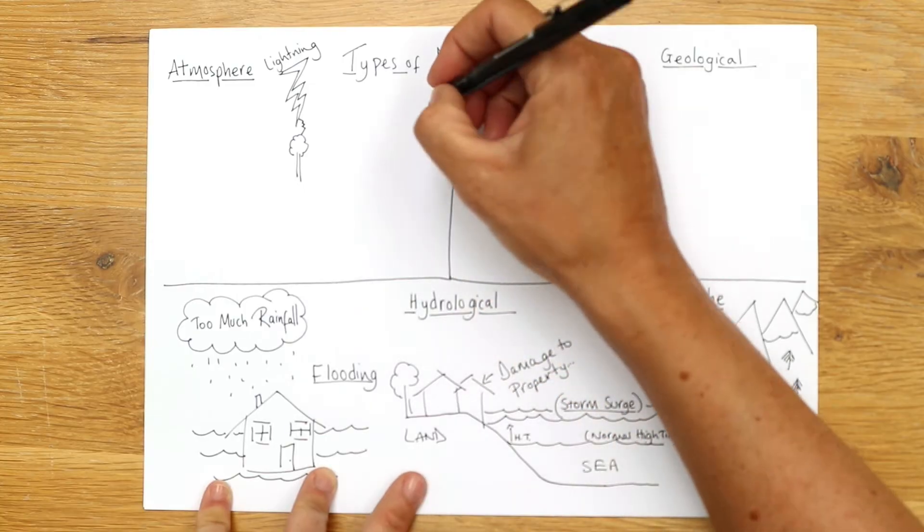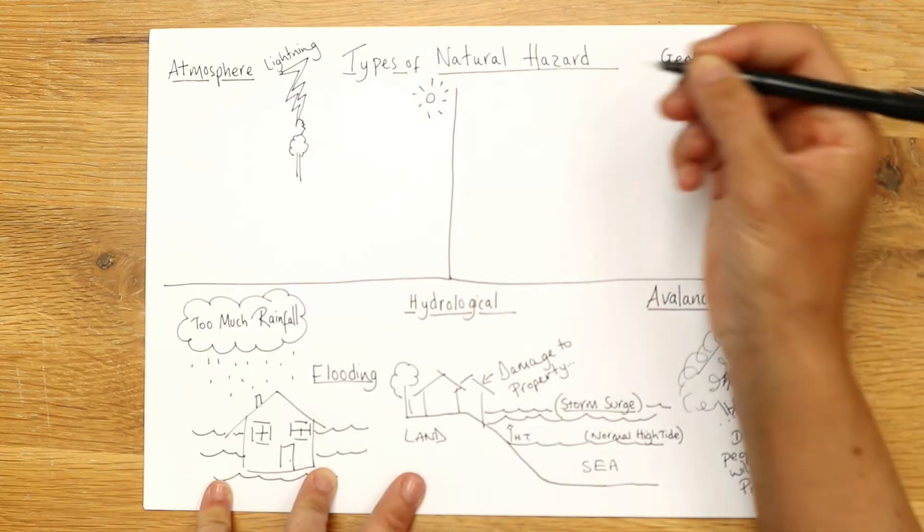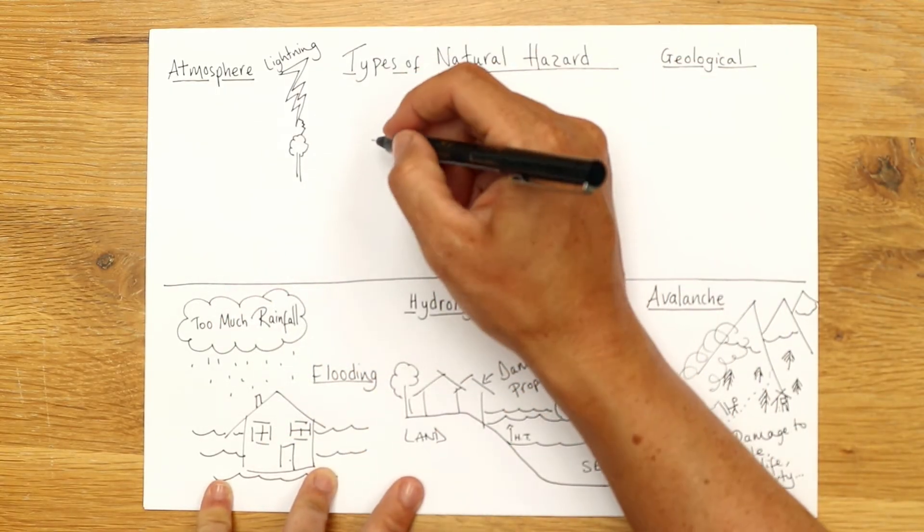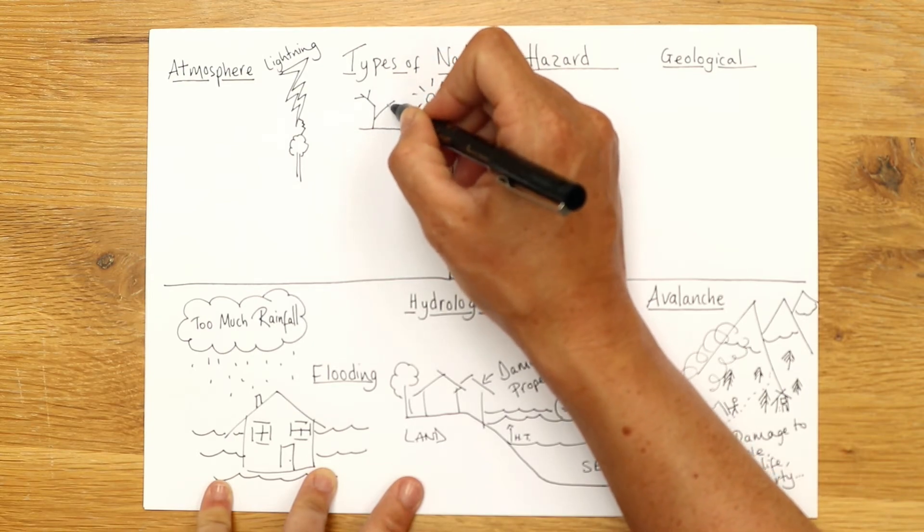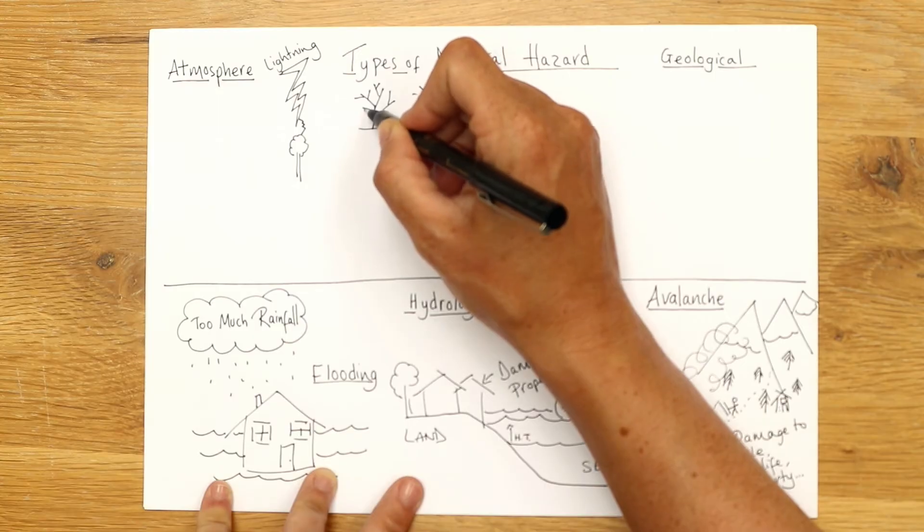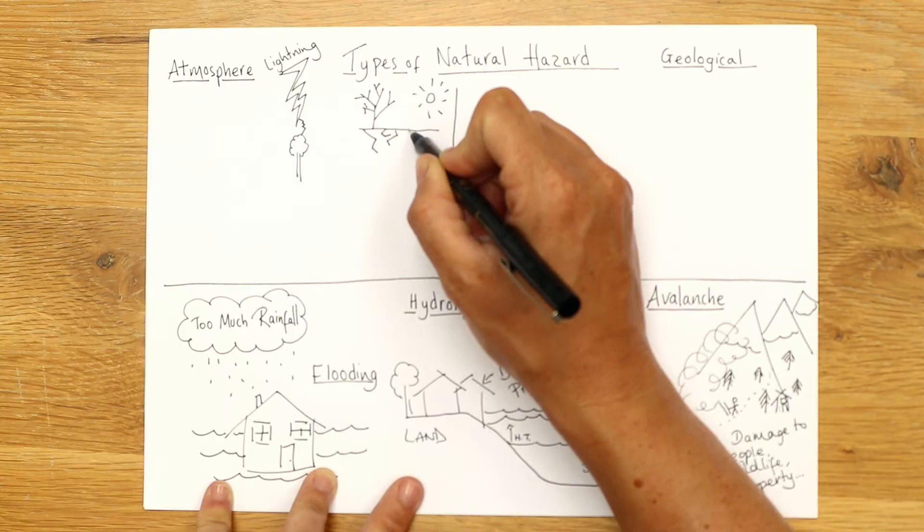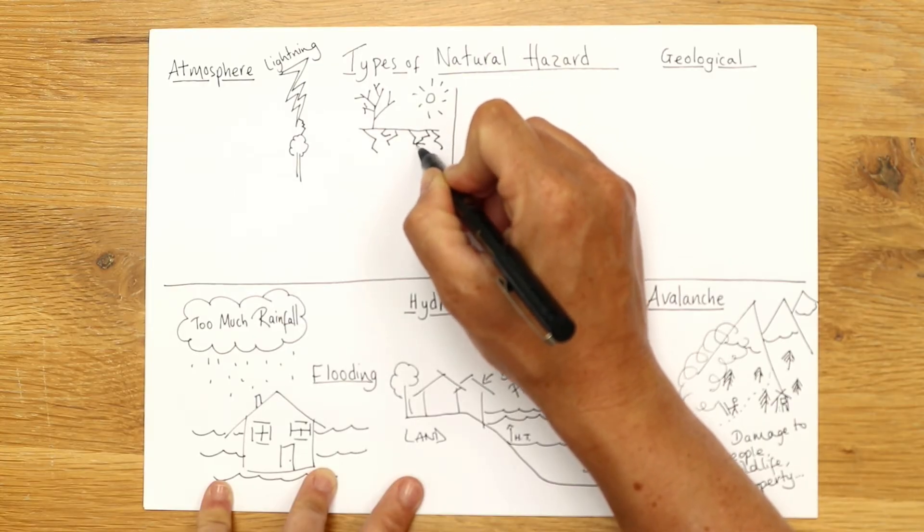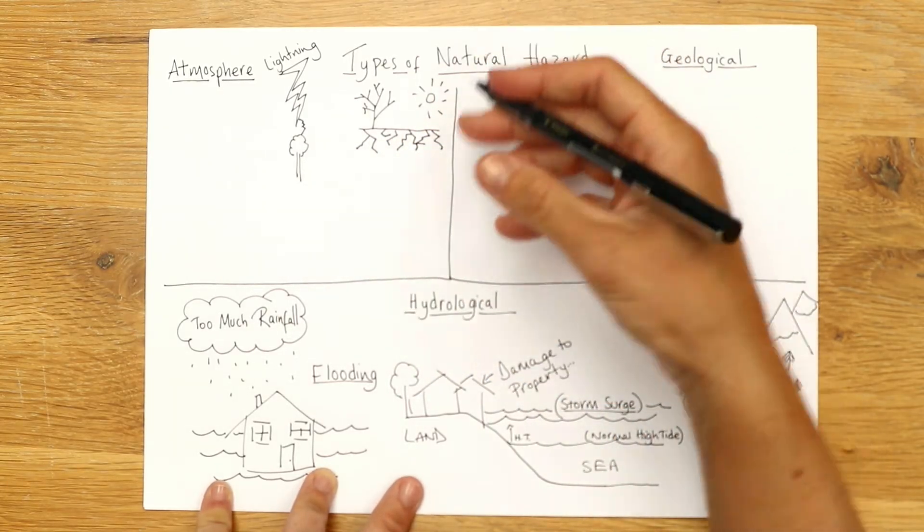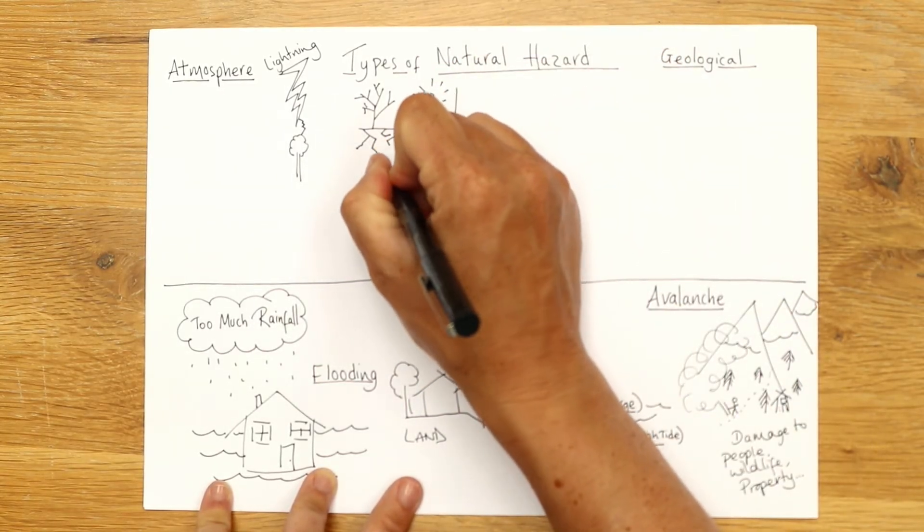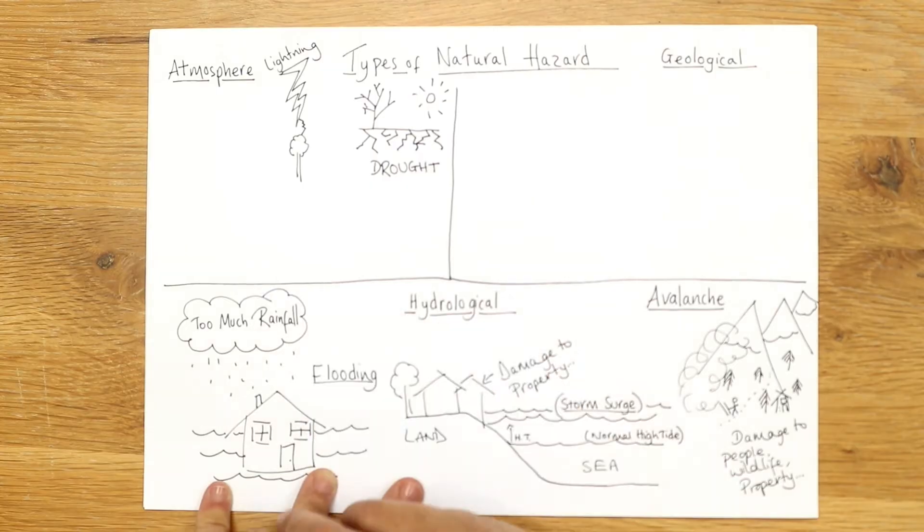Also, in the atmosphere, we can sometimes have too much sun. And that's a problem. When it gets to the point, if I just draw the land, where trees, for example, are losing their leaves and the ground is all sort of cracked and you're unable to grow crops. That's a real issue. It's going to cause problems for wildlife. It's going to cause problems for people as well. So that's called drought. So we've got lightning, we've got drought.